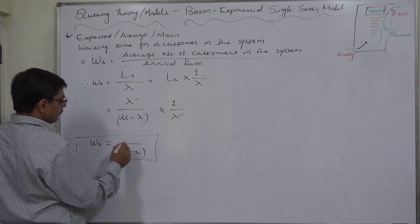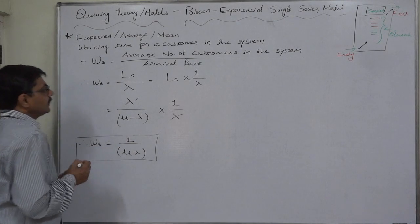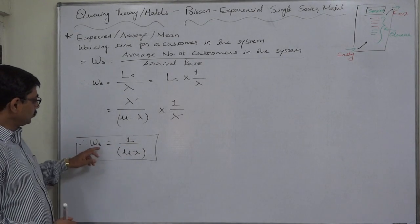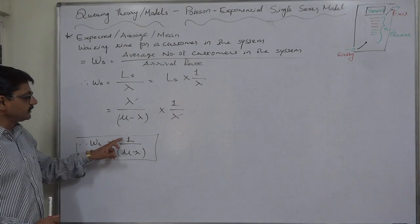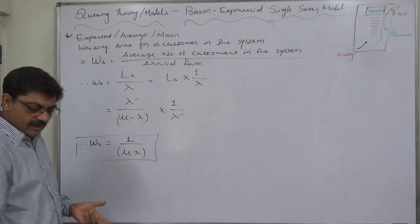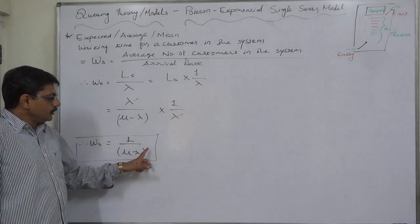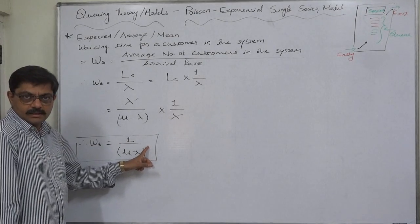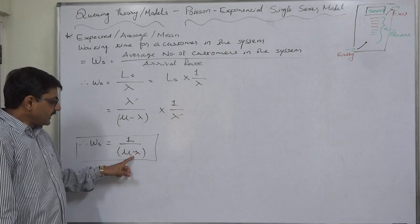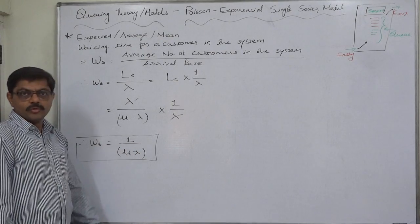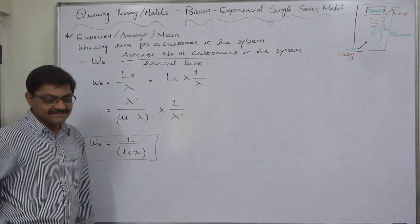Average waiting time for a customer in the system equals Ws, that is 1 upon mu minus lambda. Again, the theme is we should be able to directly substitute the value of mu and lambda in the formula. That's it. Thank you very much.